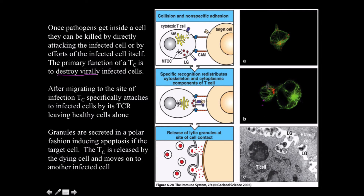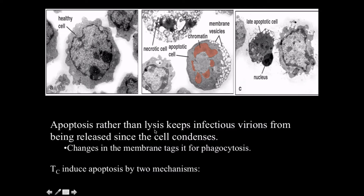We can see the exchange of lytic granules happening between the two cells. Rather than lysis, apoptosis keeps infectious virions from being released since the cell condenses. Comparing a healthy cell, a necrotic cell, and an apoptotic cell — in late apoptosis, the membrane is being eroded away and the cell is dissolving, but the nucleus is highly condensed. This leaves a tidy corpse that can be quickly cleaned up without releasing any infectious particles.